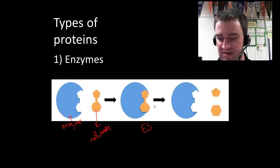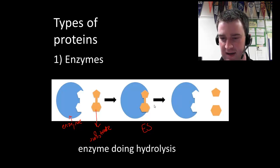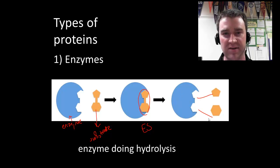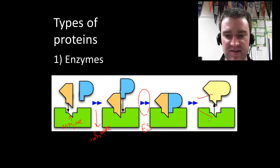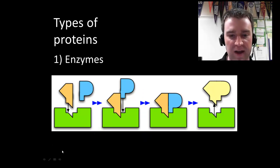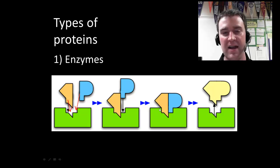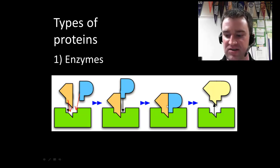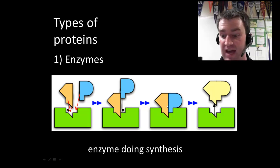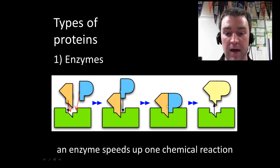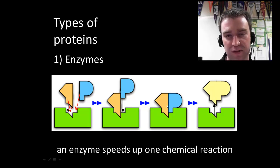In this case it looks like a hydrolytic enzyme, because it's taking a bigger substrate chemical and cutting it up and releasing two products. However, there are also enzymes that do just the opposite — other enzymes might take two substrates, the two substrates bind to the enzyme, and it speeds up a chemical reaction combining them. So some enzymes do synthesis reactions. But all enzymes interact with one particular substrate using their three-dimensional shape and speed up that chemical reaction.